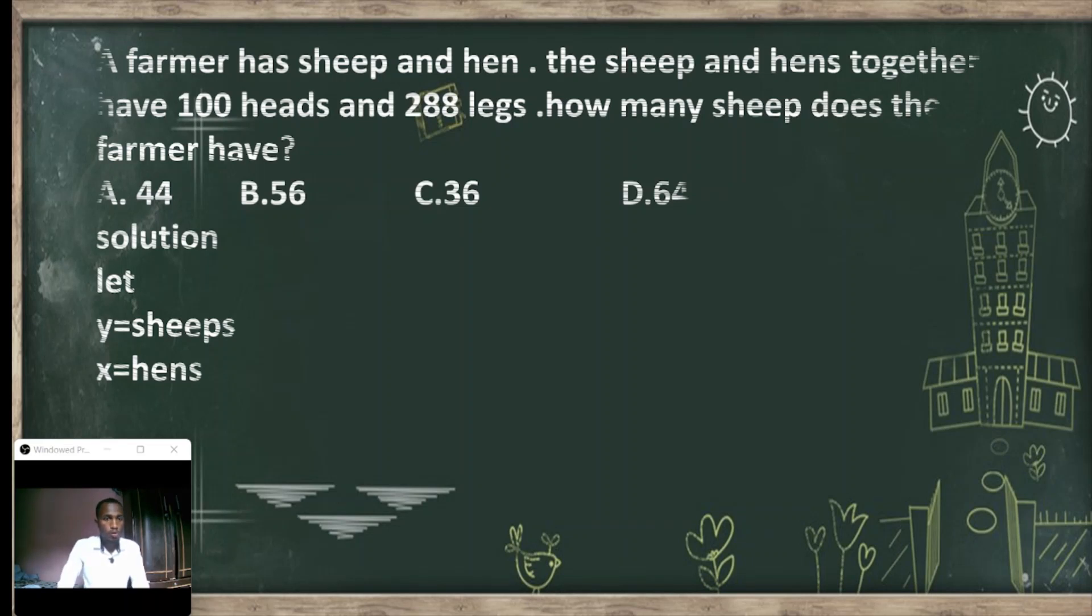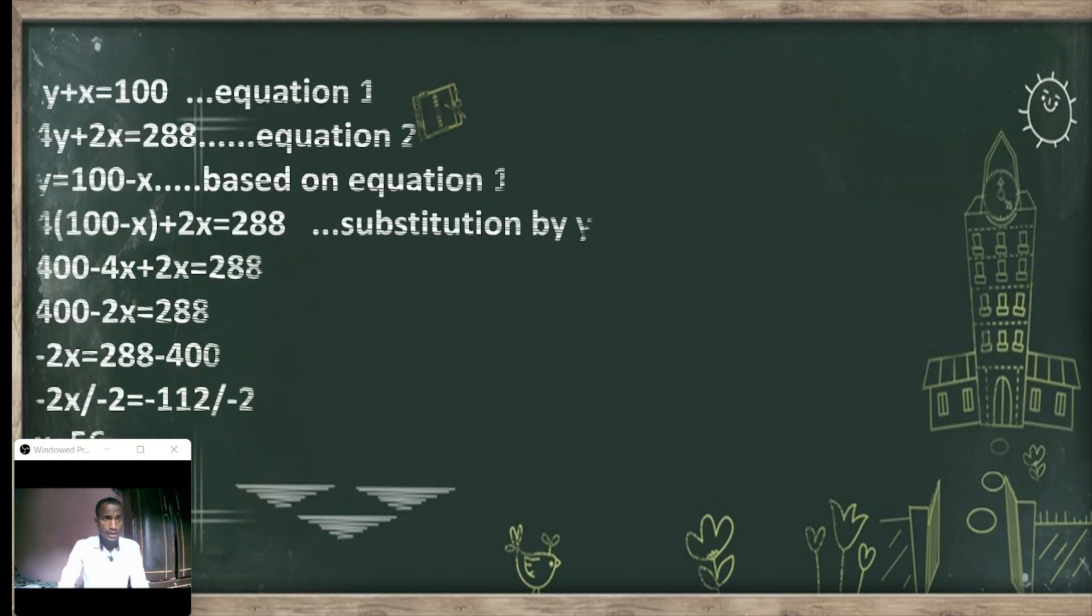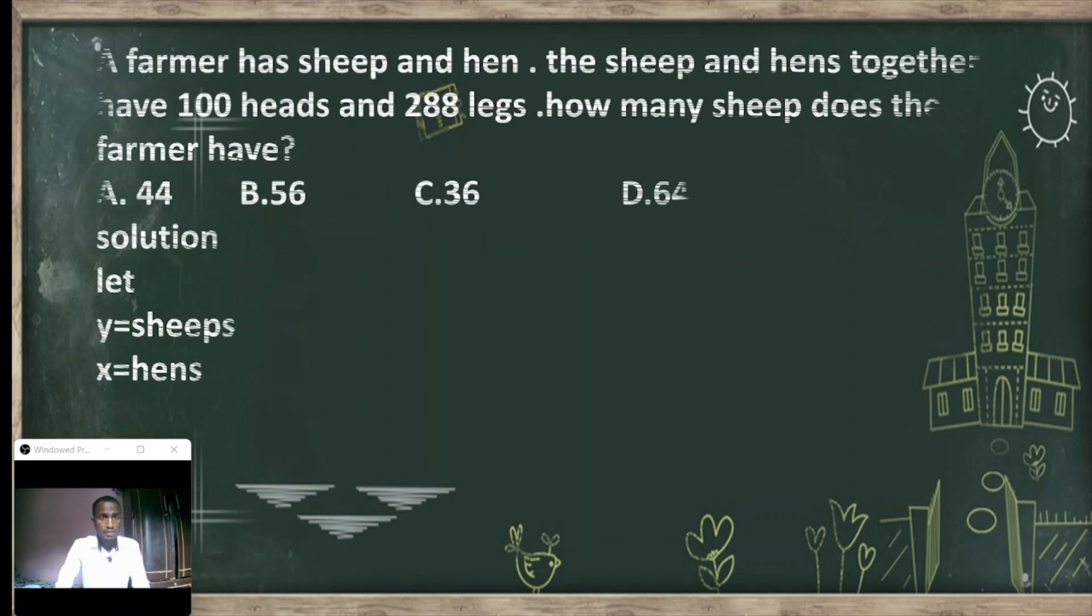Solution: Let y equal sheep and x equal hens. Let's assign them. Let me tell you before I start the explanation, the sheep and hen together have 100 heads. So x plus y equals 100.